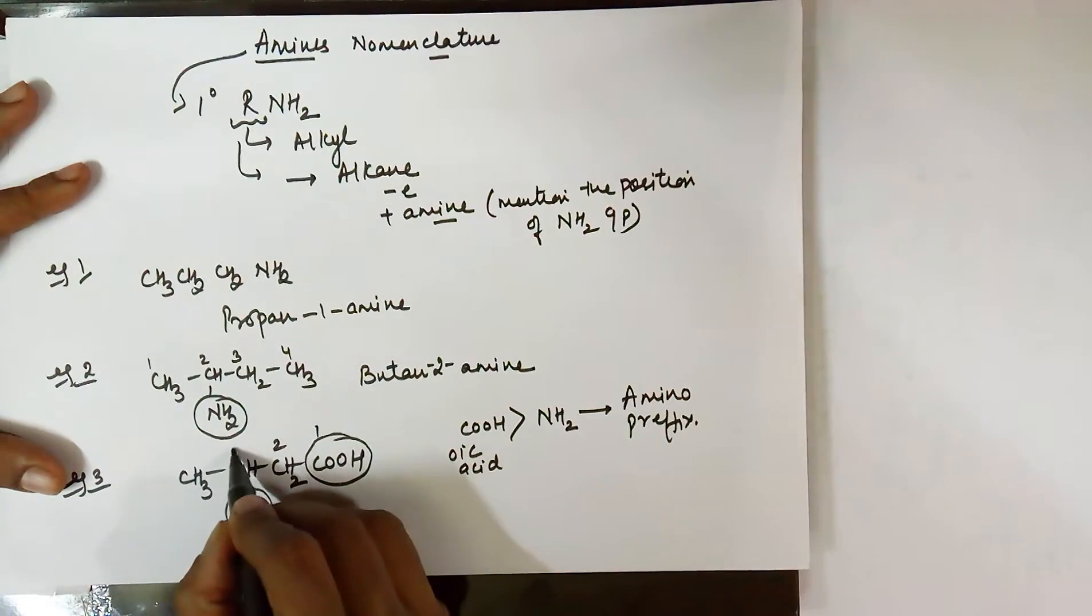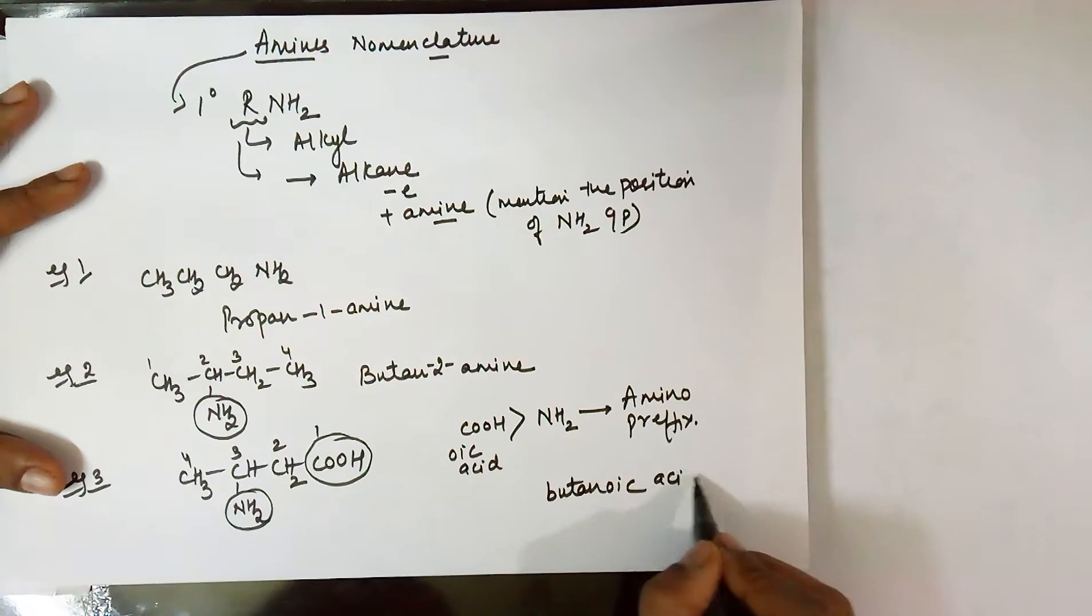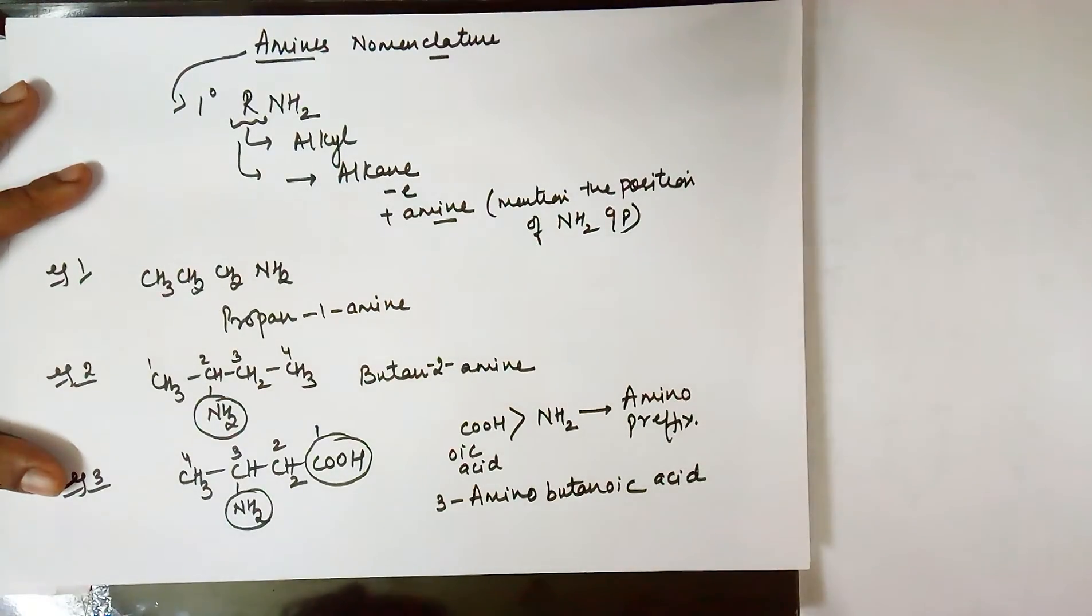1, 2, 3, 4 - you have a butanoic acid. There's no need to mention the position of the carboxylic group since it is the topmost priority and it is a terminal group. Your NH2 group is at the third position, so you need to mention 3-amino butanoic acid. So NH2 group in the presence of a higher priority group is called as 'amino'.